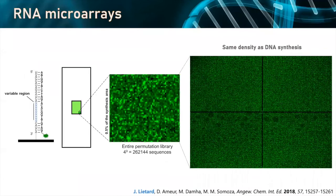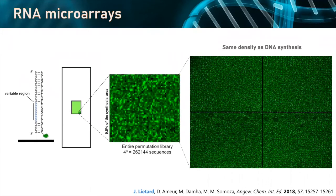The density we can make is the same as for DNA. For example, here we synthesized a 30-mer where we changed every possible base in a nine-nucleotide variable region to understand the sequence specificity of our oligonucleotides. That's the sort of range of fluorescence we can see, and in terms of density that's going to be the same as DNA — so pretty much close to 800,000 different sequences we can make.